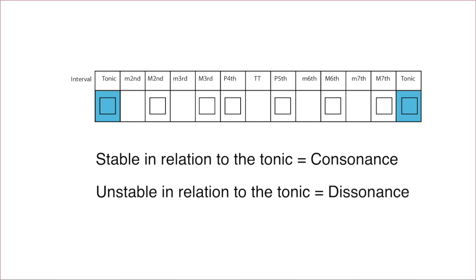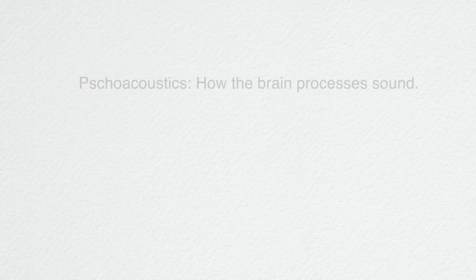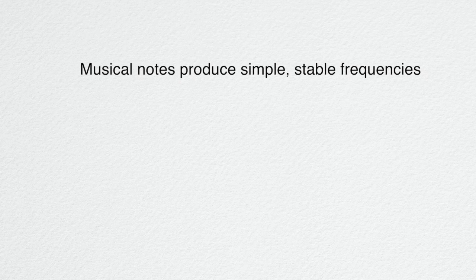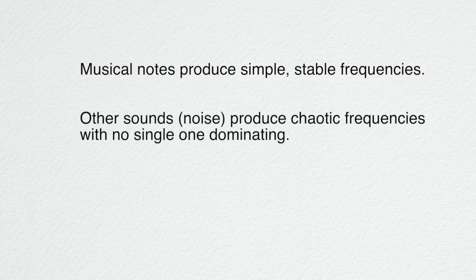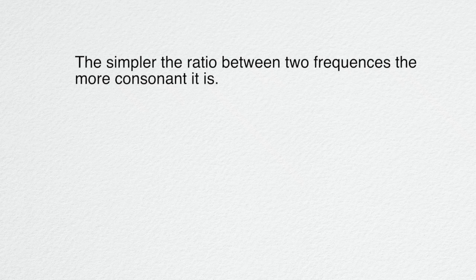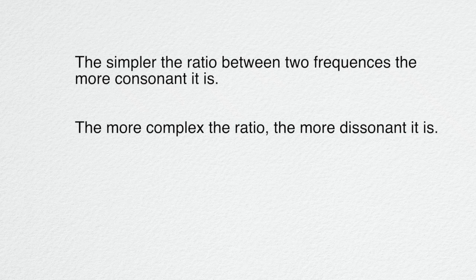Why this is true has something to do with what we call psychoacoustics, which is how the brain processes sound. Musical notes are unusual in the world of sound in that they produce simple, stable frequencies, as opposed to almost all other sounds, which we call noise, which produce chaotic masses of frequencies with no single predominating one. When we relate two musical notes, the simpler the ratio between their fundamental frequencies, the more consonant we say they are. And then conversely, the more complex the ratios, the more dissonant.